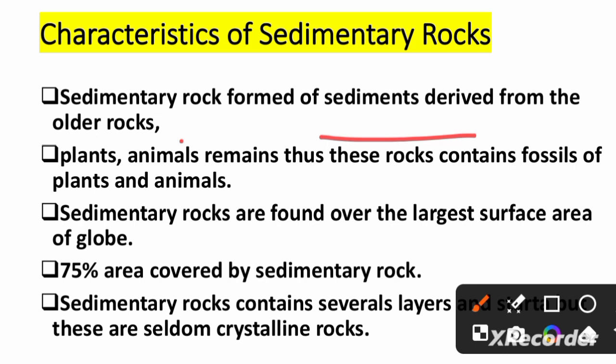If you compare sedimentary rocks with igneous rocks, fossils are not found in igneous rocks. This is because magma is extremely hot, and also because the formation of igneous rocks mainly occurred at the time of the origin of the Earth, when life had not yet originated. Sedimentary rocks are found over the largest surface area of the globe — covering 75% of the Earth's surface, while the remaining 25% is covered by igneous and metamorphic rocks.